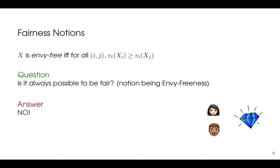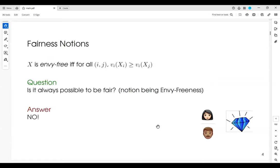The most popular fairness notion is envy-freeness, where no one envies any other bundle and everyone is happy with their own bundle. Now the question is: can we always achieve envy-freeness in every instance? The answer is no. Suppose there is only one good and two agents. Since the good cannot be divided, you give it to one agent. Whoever gets it is happy, and whoever doesn't will envy the other. So we cannot achieve envy-freeness even in a simple example.